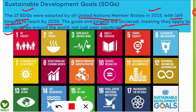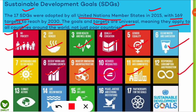The 17 Sustainable Development Goals are: 1. No Poverty; 2. Zero Hunger; 3. Good Health and Well-being; 4. Quality Education; 5. Gender Equality; 6. Clean Water and Sanitation; 7. Affordable and Clean Energy; 8. Decent Work and Economic Growth; 9. Industry, Innovation and Infrastructure; 10. Reduced Inequalities; 11. Sustainable Cities and Communities; 12. Responsible Consumption and Production; 13. Climate Action; 14. Life Below Water; 15. Life on Land; 16. Peace, Justice and Strong Institutions; and 17. Partnerships for the Goals — where all nations should come together in partnership to fulfill these goals.